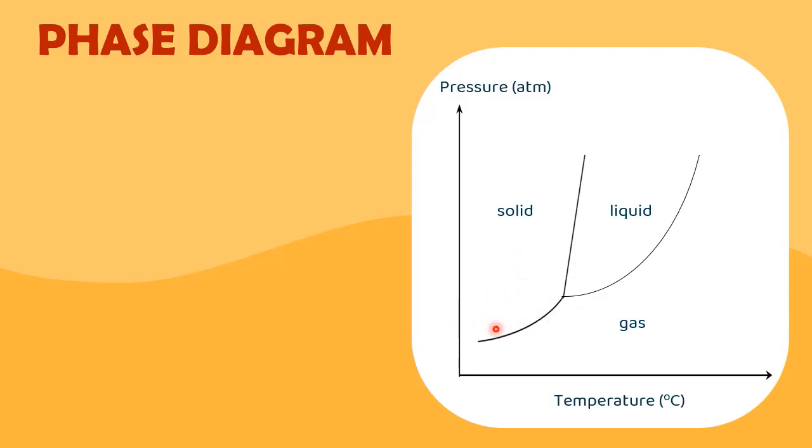Note that as long as they are separated by a line, each phase is considered homogeneous. The second information lies on the lines that divide the diagram into states, which represent the combinations of pressure and temperature at which two states are in equilibrium.